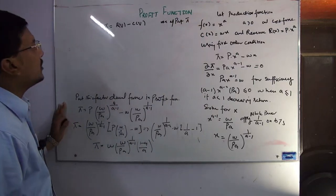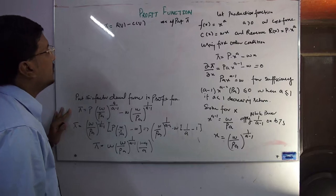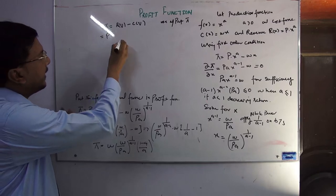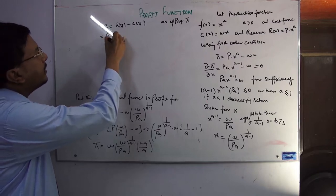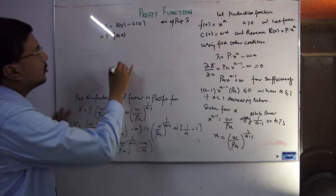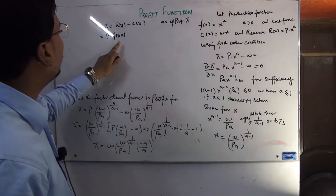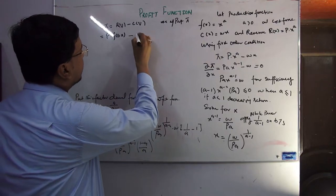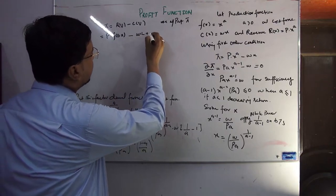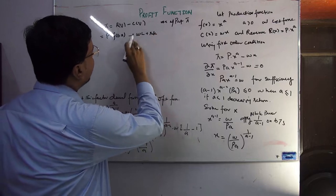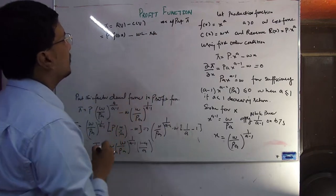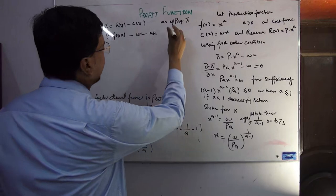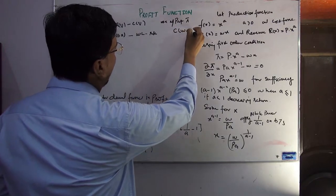What is the first order condition? Revenue is basically p times q, where q is the production function with two inputs — labor (L) and capital (K). The cost function is wL + rK, which will be subtracted. So the cost function can be written as a function of w, r, and q.